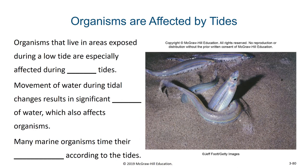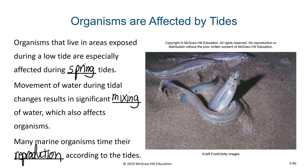Organisms that live in areas exposed during a low tide will be especially affected during the spring tides. Movement of water during tidal changes results in significant mixing of water, which also affects organisms. Many marine organisms time their reproduction according to the tides. In the case of the California grunion, the males and females actually beach themselves as high as they can during the highest tides of one month to reproduce and lay their eggs within the sand. Then one month later, at the next spring tide, those eggs will be hatching and the young fish will be able to swim back to the ocean.